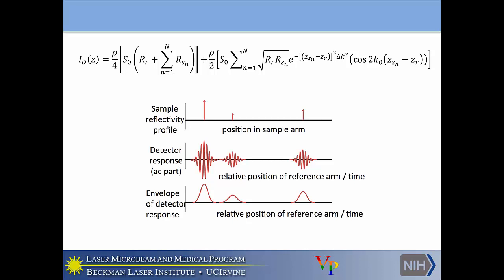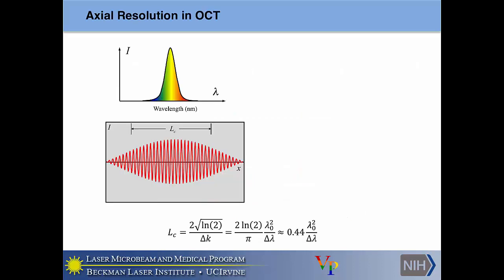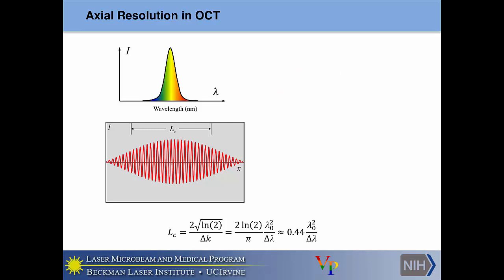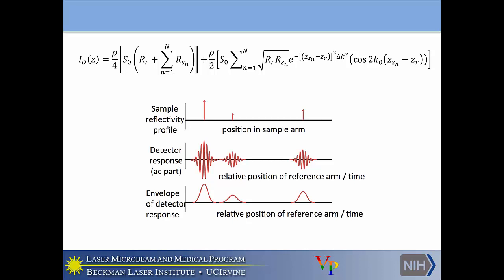From this, we can take the modulation envelope — essentially performing a Hilbert transform — and plot it out to obtain our OCT image. Using a laser with narrower bandwidth increases the modulation envelope width or coherence length. By using a broader laser, we can shrink the coherence length. This means we shrink the coherence width and thus reduce our axial resolution. Axial resolution for OCT is completely dependent on the bandwidth of the laser.